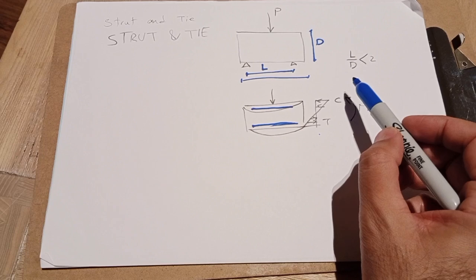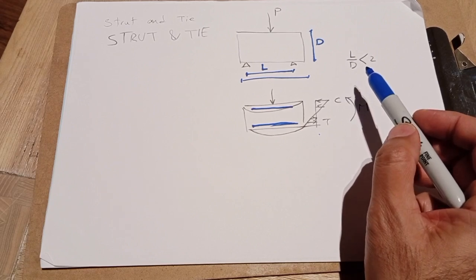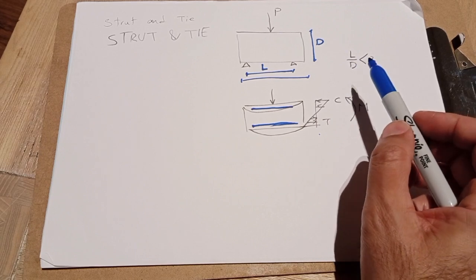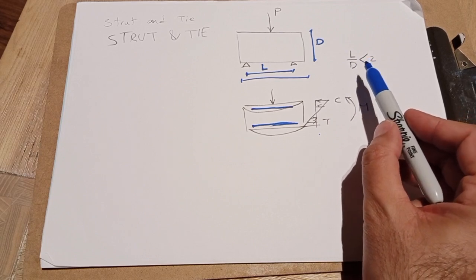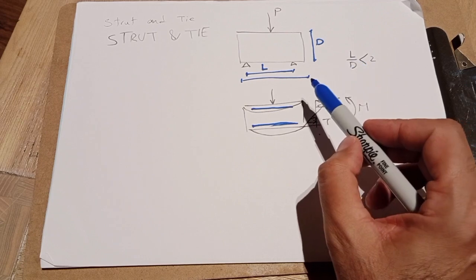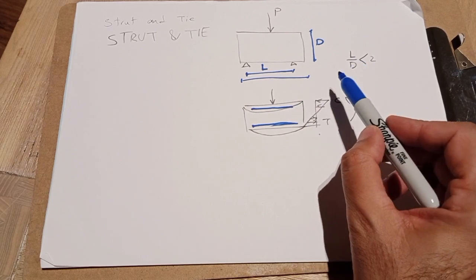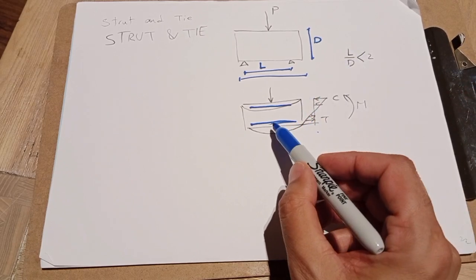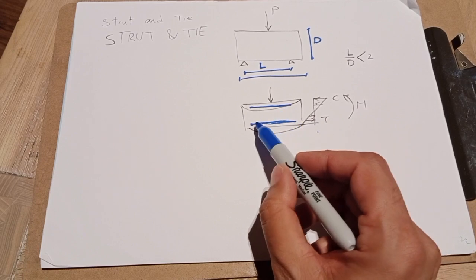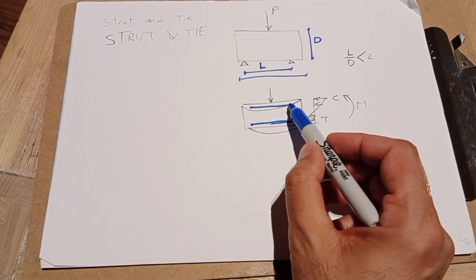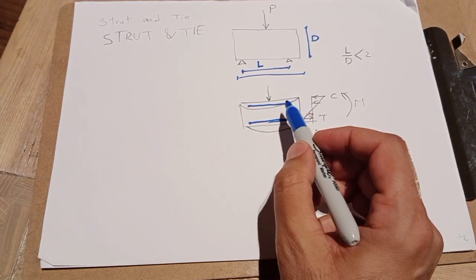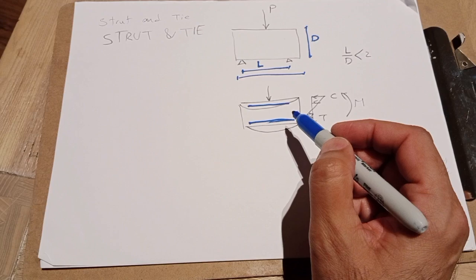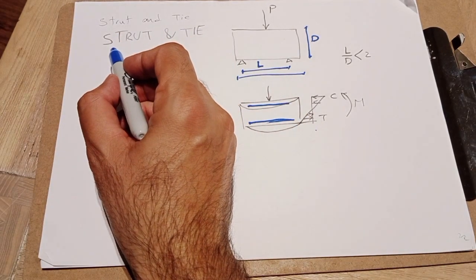This L/D ratio is not clearly defined in global standards and technical documents, but some papers use it as the basis for defining deep beams versus bending beams. If we have this ratio in a beam, we can't say that a beam with just a tension bar, compression bar, and concrete is sufficient for the load. In that case, we have a strut and tie problem.